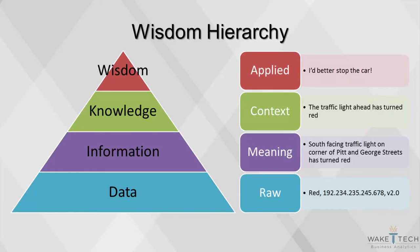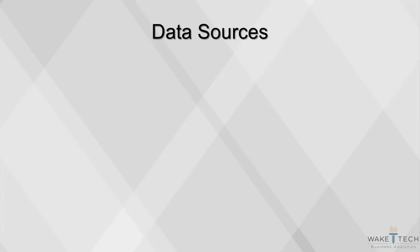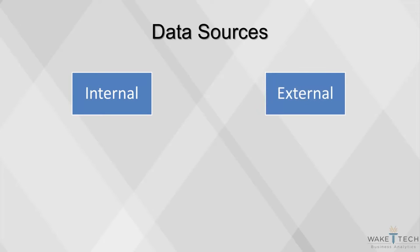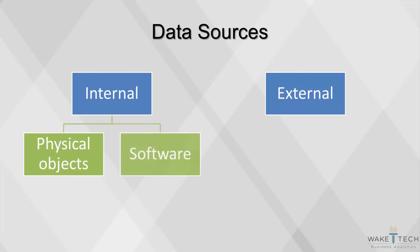The original data has become useful, enabling an action to be taken. So where does data come from? Data can come from a variety of sources, both internal and external. Internal data is collected by businesses and stored within their own servers. This data can be generated in a number of ways, either by physical objects such as sensors or barcodes, or by using computer software such as websites.